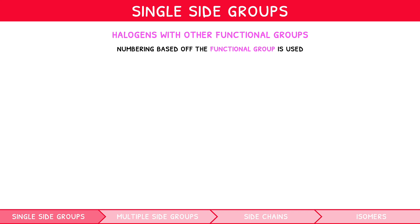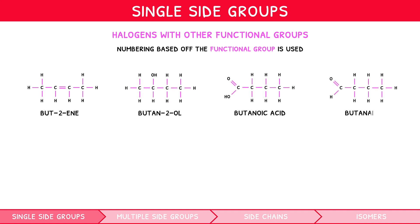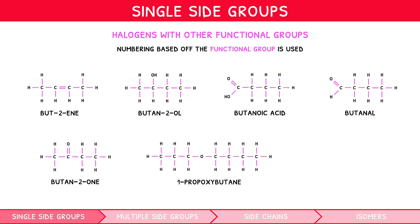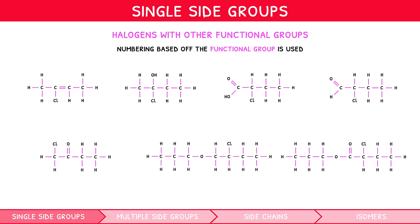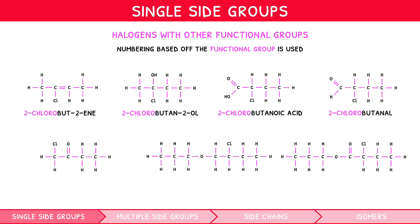If we considered the four-carbon examples for each species used in our previous video — butene, butan-2-ol, butanoic acid, butanal, butan-2-one, 1-propoxybutane and propylbutanoate — and added a chlorine atom in the following location, we could say: butene becomes 2-chlorobutene, butan-2-ol becomes 2-chlorobutan-2-ol, butanoic acid becomes 2-chlorobutanoic acid, butanal becomes 2-chlorobutanal. Butan-2-one would not work as there are no available bonds, but if added to the first carbon it would become 1-chlorobutan-2-one. 1-propoxybutane becomes 1-propoxy-2-chlorobutane, and propylbutanoate becomes propyl-2-chlorobutanoate.